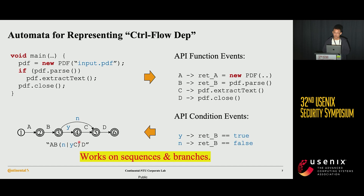The automata has two paths. First is A, B, N, D — because N means the PDF parsed failed, so it just calls PDF close directly. The other path is A, B, Y, C, D — meaning the PDF parsed successfully, and it extracts all the text of the PDF.